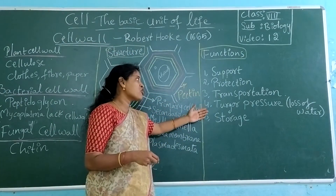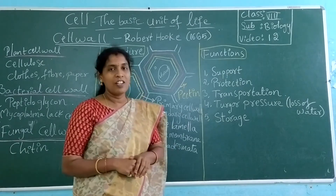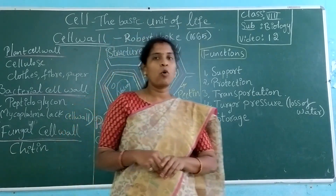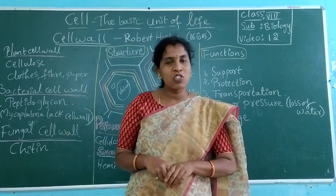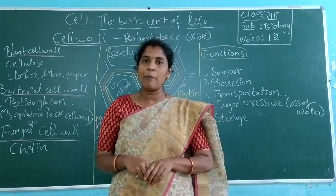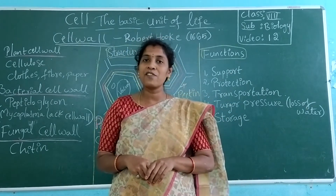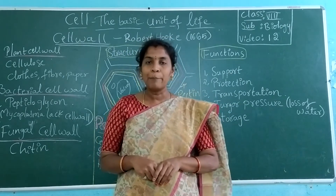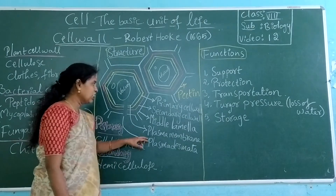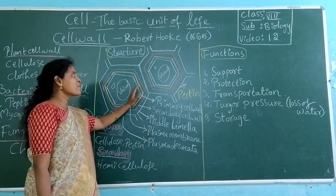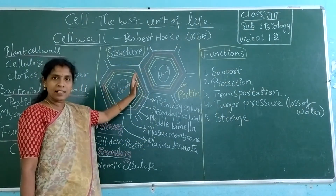So the cell wall gives support, protection, helps with transportation, manages turgor pressure, and provides storage. The cell wall is made up of three layers: the primary and secondary layers are made up of cellulose, and the middle lamella is made up of pectin, which gives support to attach two cells together.